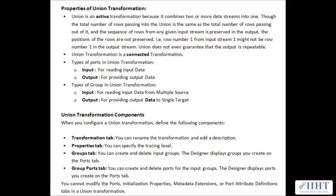The Union Transformation is a connected transformation. The types of ports in a Union Transformation are input and output. The input port is for reading input data and the output port is for providing output data. The types of groups are the input group and the output group. The input group reads input data from multiple sources, and the output group provides output data to a single target.